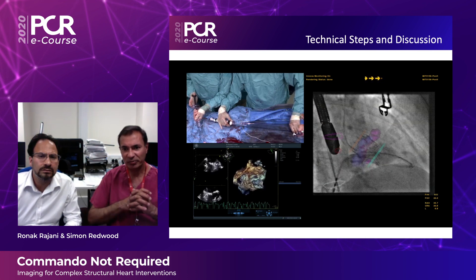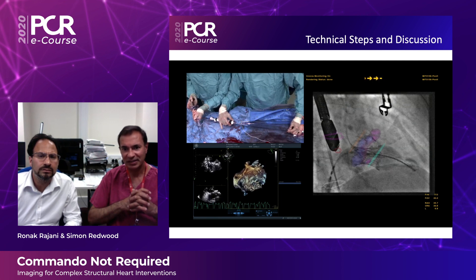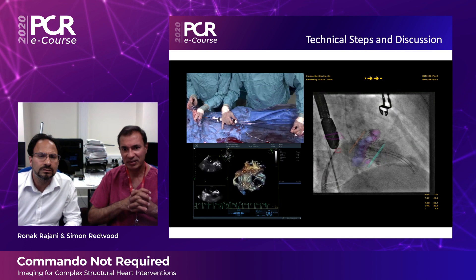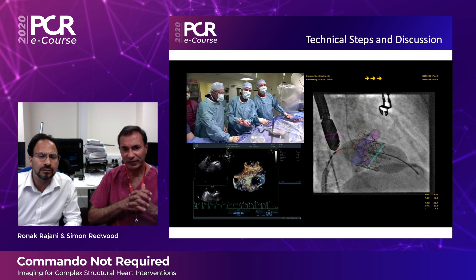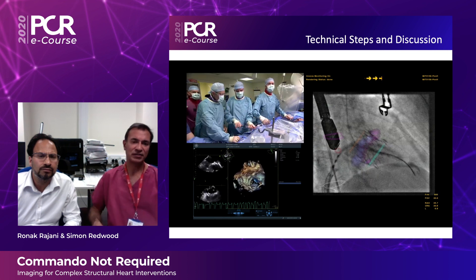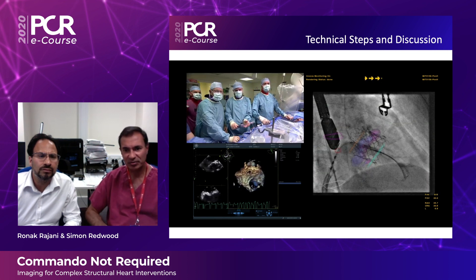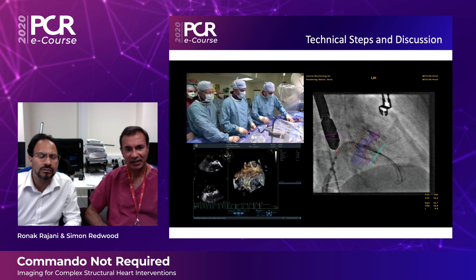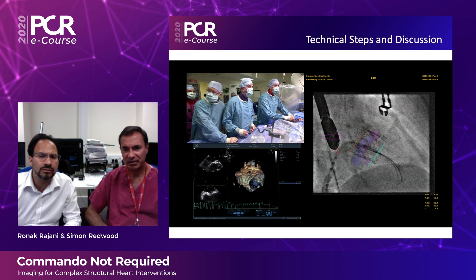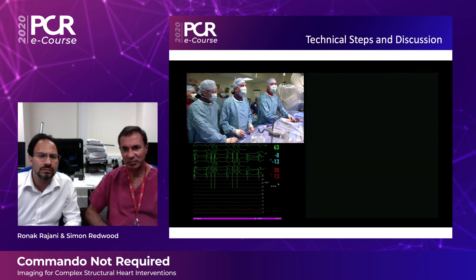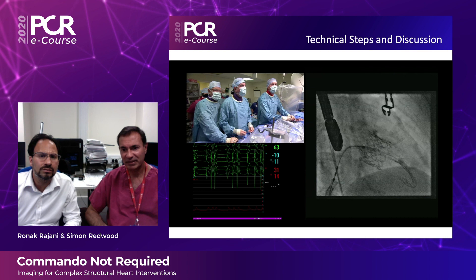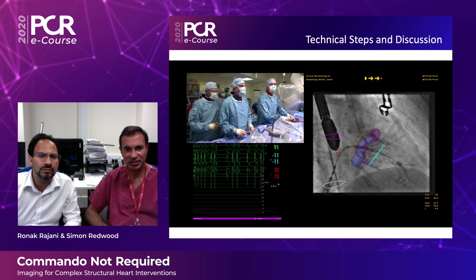During valve deployment you can see I'm pushing the whole valve forward in order to make it coaxial with the mitral annular calcification. Following deployment you can see the transesophageal echo on the bottom left. It's then simply a matter of removing the device and checking with both transesophageal echo, and we also performed left ventriculography to show that there's no significant mitral regurgitation.